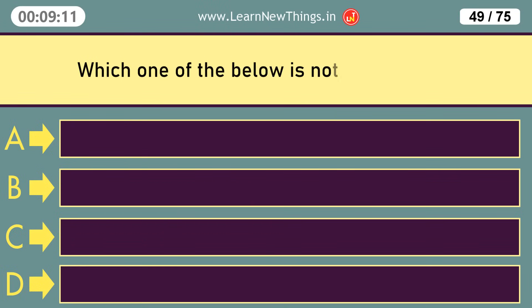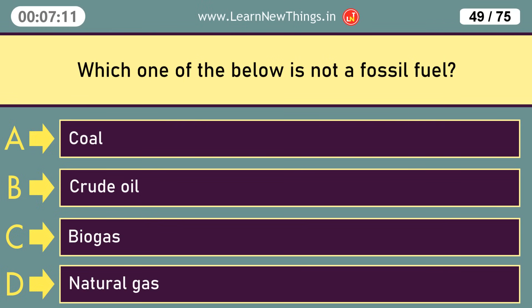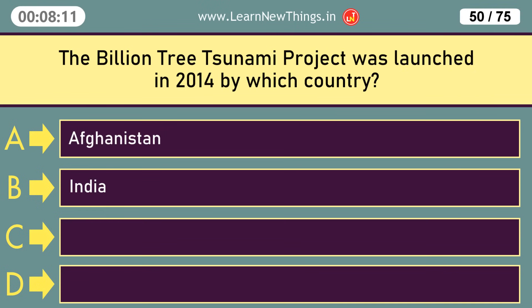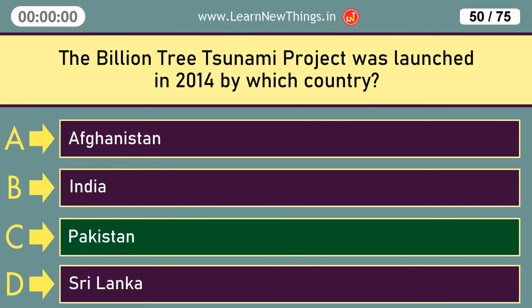Which one of the below is not a fossil fuel? Biogas. The Billion Tree Tsunami Project was launched in 2014 by which country? Pakistan.